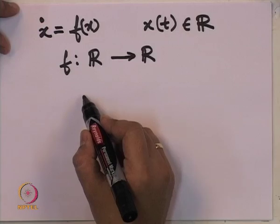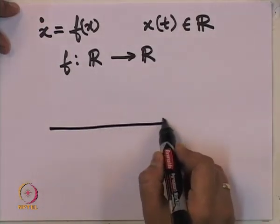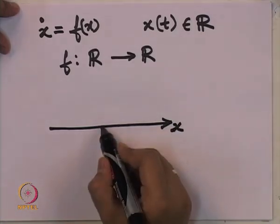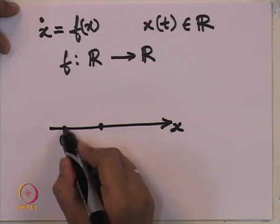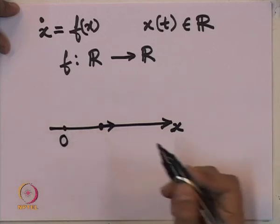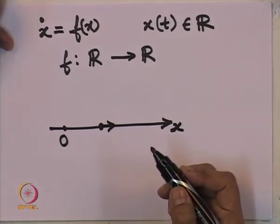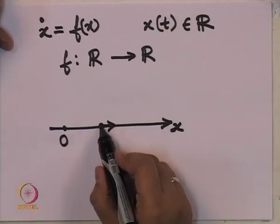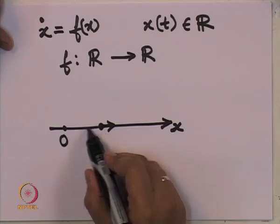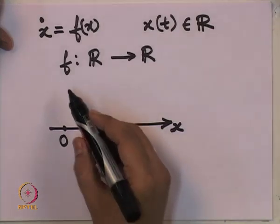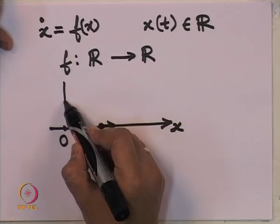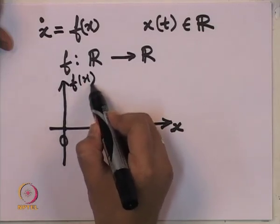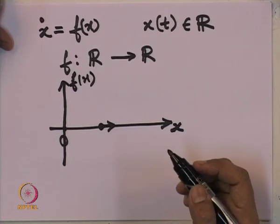For this differential equation, the variable x lives only on this line. At any time instant — suppose this is the origin — at every point there is an arrow which is either towards the positive direction of x or the negative direction of x, depending on whether x-dot at that point is positive or negative. Whether it is positive or negative can be very conveniently seen by plotting f here. This is only possible when x has only one component.